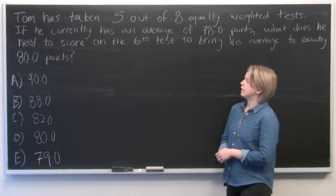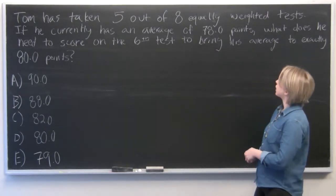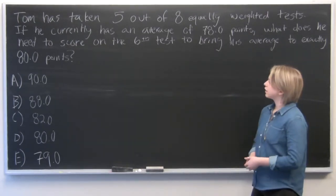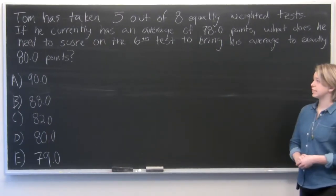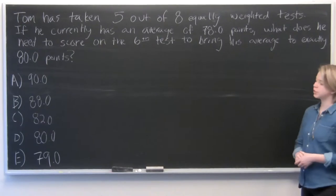Our question here reads, Tom has taken five out of eight equally weighted tests. If he currently has an average of 78 points, what does he need to score on his sixth test to bring his average to 80 points?